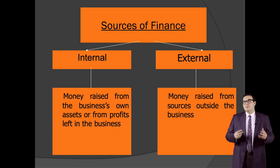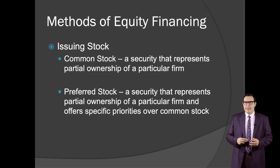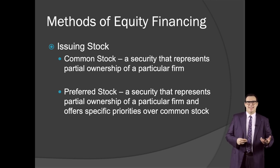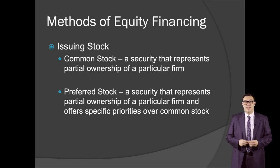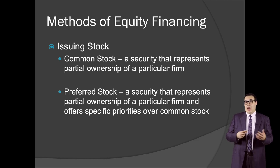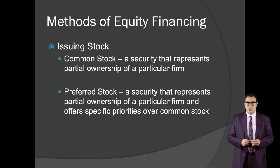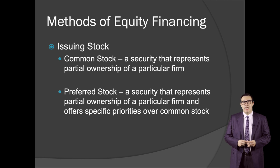Now let's proceed with stock. There are two types of stock. Common stock is a security that represents partial ownership of a particular firm. Preferred stock is also a security that represents partial ownership of a particular firm, but it offers special priorities over common stock.